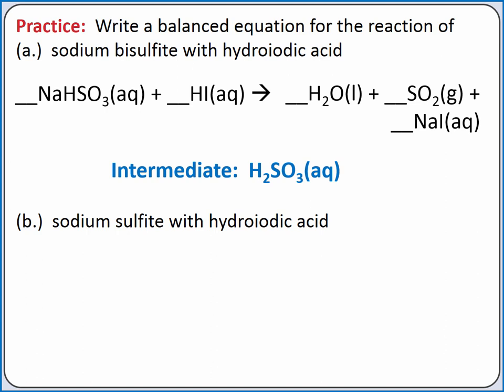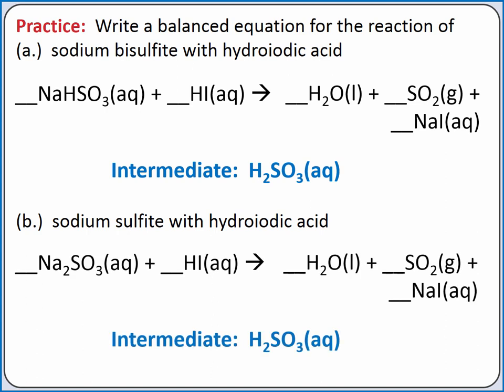If we react sodium sulfite with hydroiodic acid, we still produce the same intermediate, sulfurous acid. So we also produce the same products. The only difference comes in balancing the reaction.